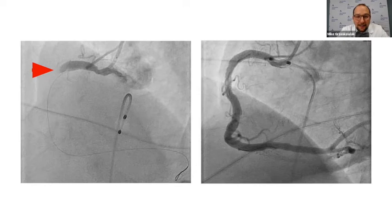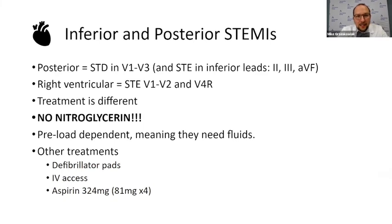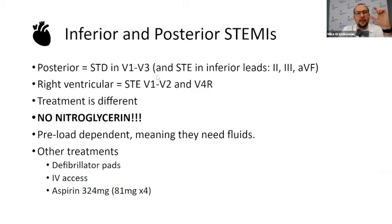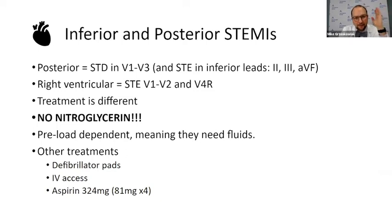I want to show you that these inferior STEMIs are very, very serious. Whenever you see ST elevations in the field, even if someone looks stable, know that they might become unstable. Inferior and posterior STEMIs — posterior STEMIs show ST depressions in V1 through V3. It's important to note they won't continue into V4, V5, V6, unless they're also having anterior wall ischemia, which would be rare.